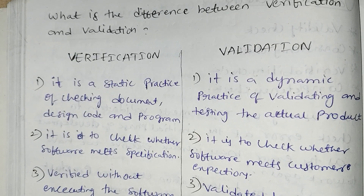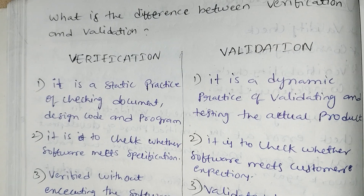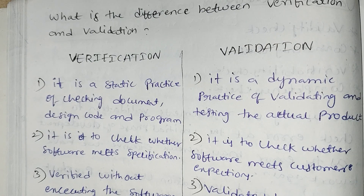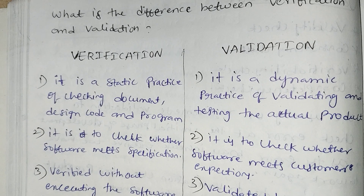Verification is static — meaning it is fixed, no changes. Validation, on the other hand, is dynamic. It is a dynamic practice of testing the actual product.